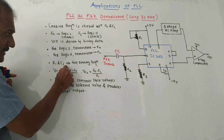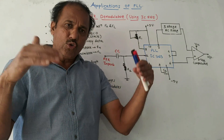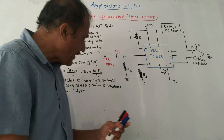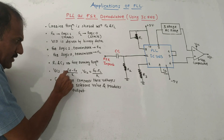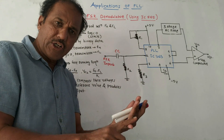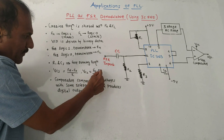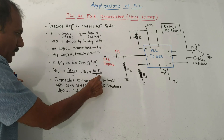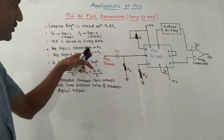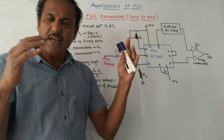R1 and C1 set the free-running frequency. Binary data is applied to the VCO — the voltage-controlled oscillator. The control voltage related to higher frequency FH is given by VC1 equals (FH minus F0) divided by K, where K is the coefficient related to voltage-to-frequency conversion. Similarly, the control voltage VC2 related to lower frequency FL is given by (F0 minus FL) divided by K. The comparator compares these voltages with a reference value and produces the digital output. This is how PLL can be used as an FSK demodulator.